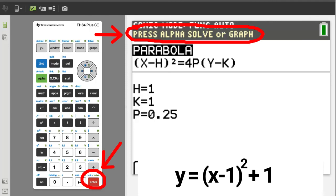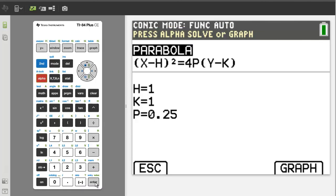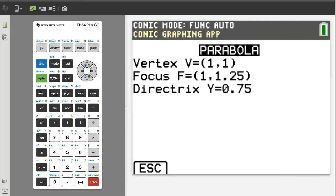There is a green solve above the enter button. Press the enter button. And there is the information. Vertex at 1 comma 1, focus at 1 comma 1.25, and the directrix is at y equals 0.75.